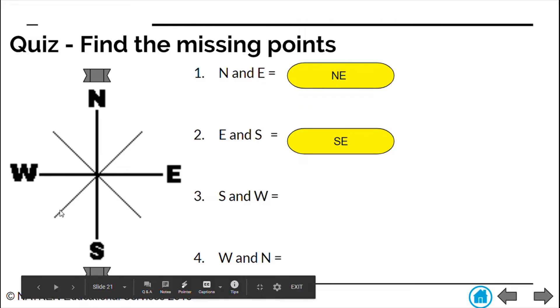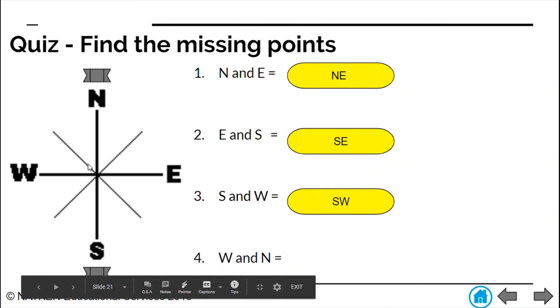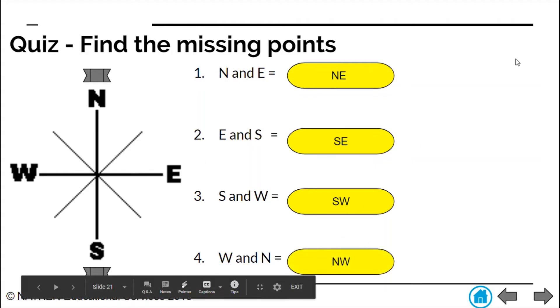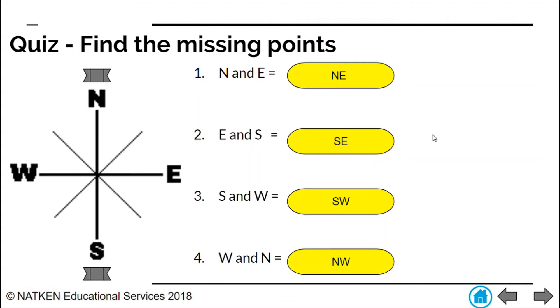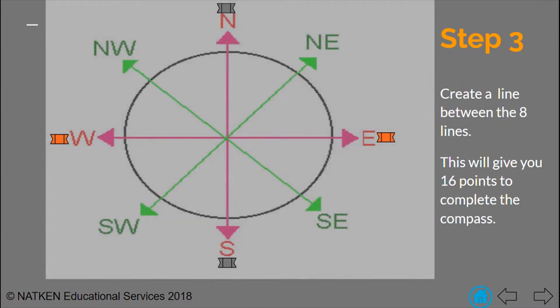For this blank spot here we would end up with south and west which would give us southwest. And finally this section west and north we will put the north first because he is our king and then we end up with our northwest. So that would give us our eight point compass.